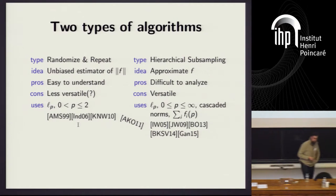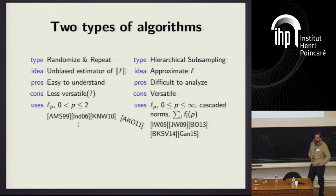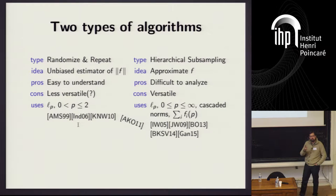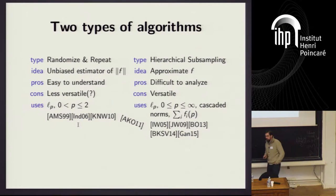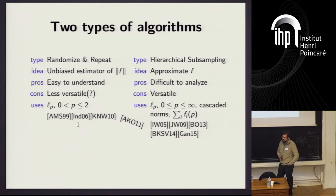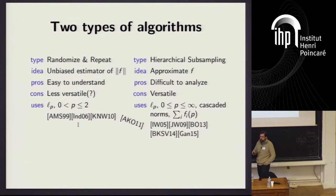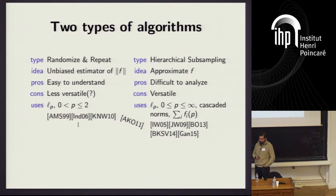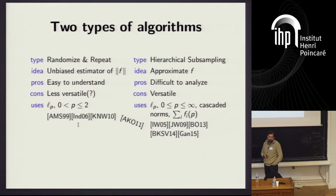Norms on data streams have a long history. Most of the work has been about approximating Lp norms, for p from 1 to infinity. There are broadly two types of algorithms. The first I'll call 'randomize and repeat': we inject some randomness into the stream — this is the vector z — and construct an unbiased estimator of the norm, then use averaging and medians to get a high probability, high quality estimate. The second type, which is where our algorithm falls, is hierarchical subsampling, where instead of approximating the norm immediately, we construct an approximation to the vector f itself.